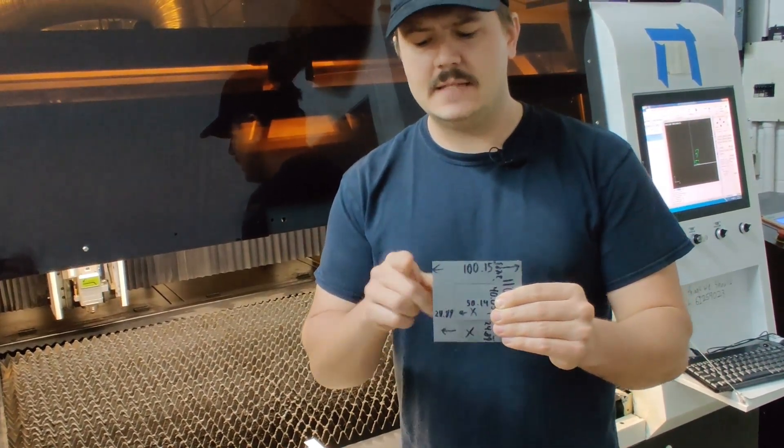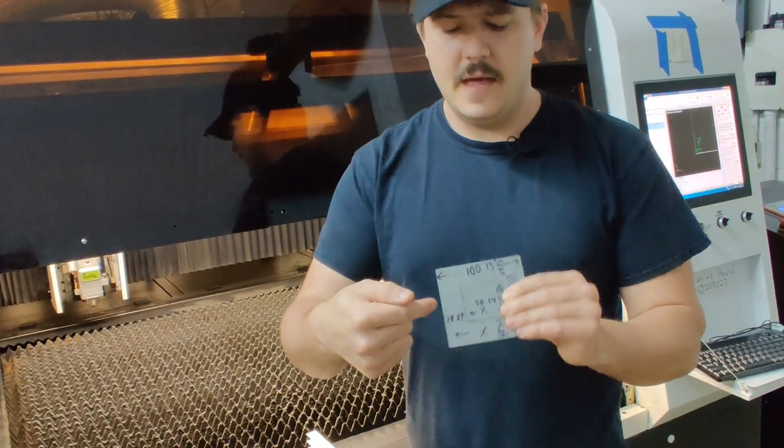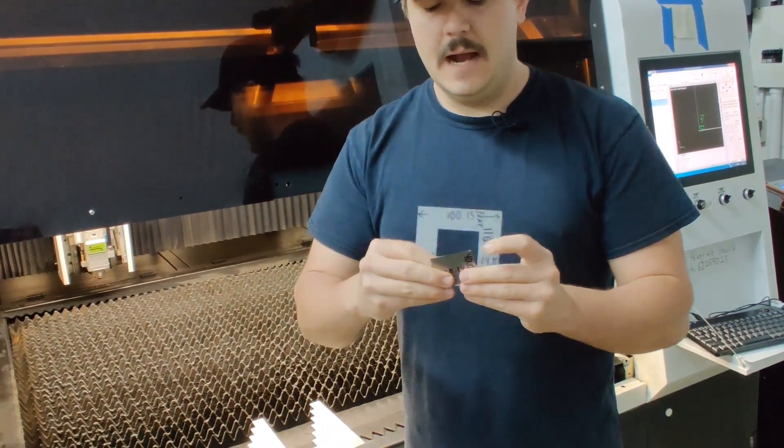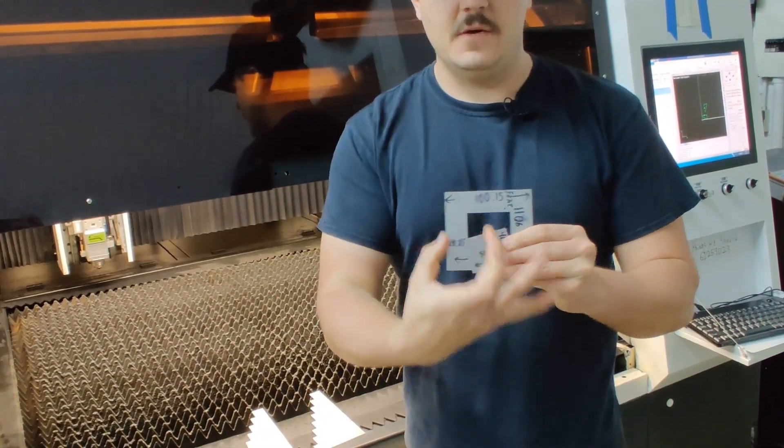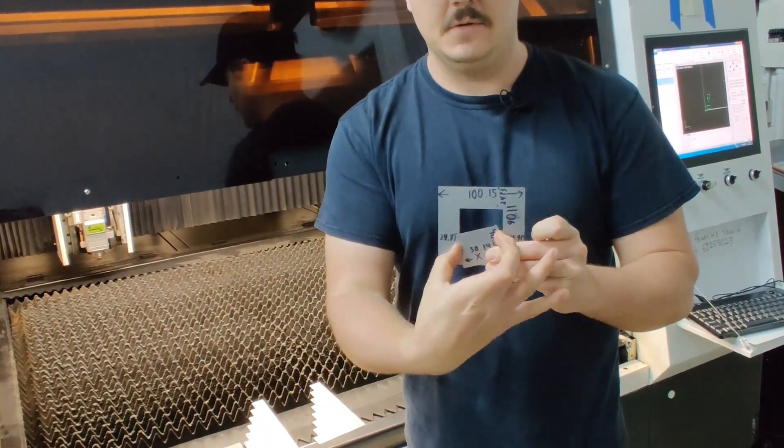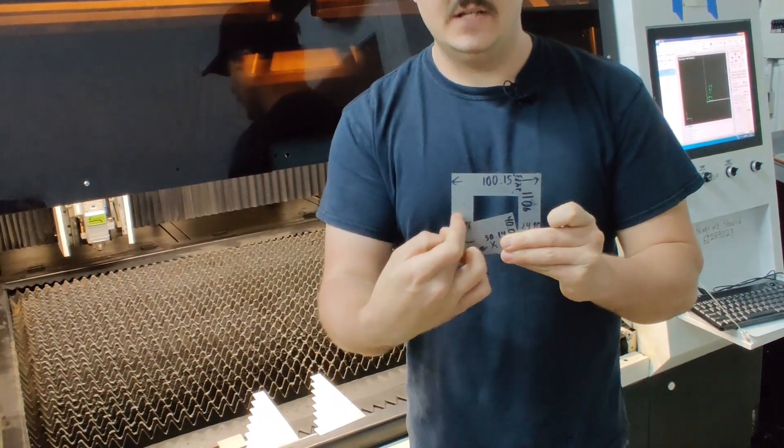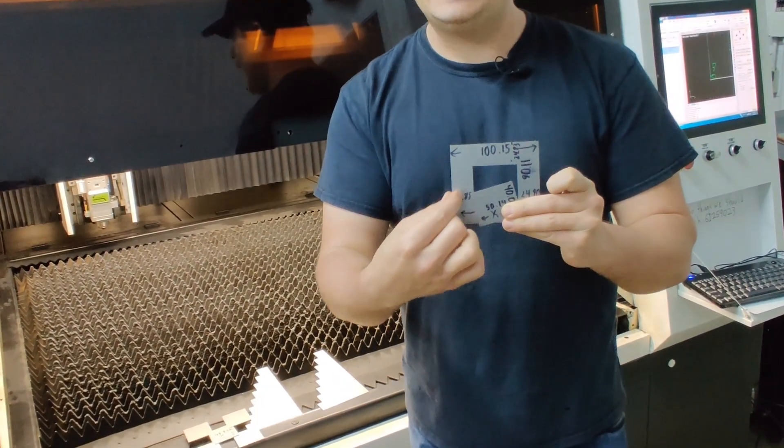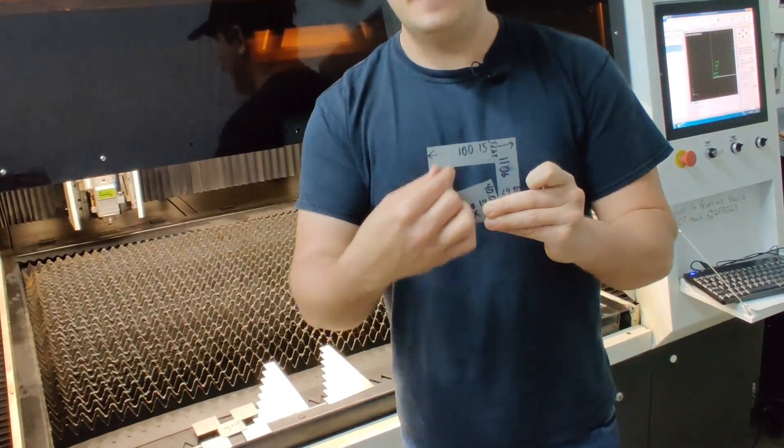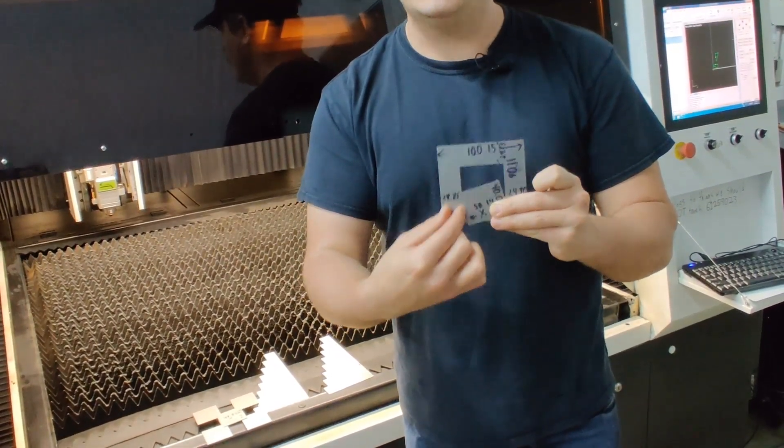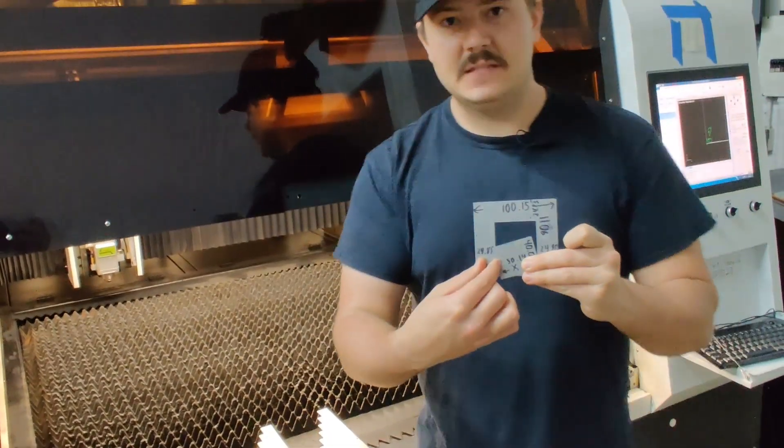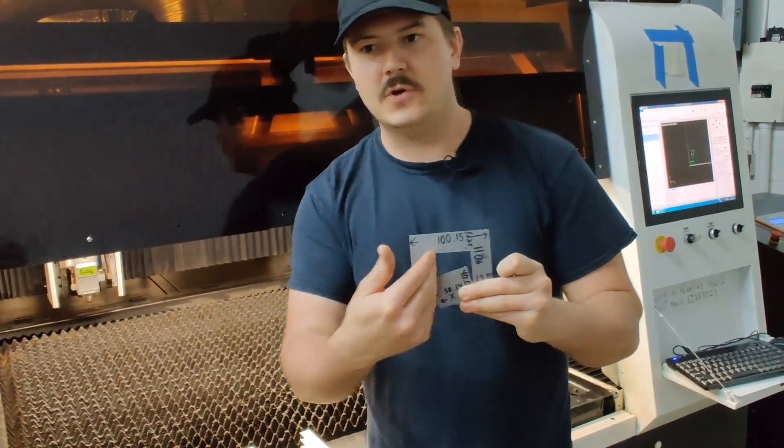You can do this with a feeler gauge and that'll get you close, but the most precise way is to cut a square, then you measure the widest point with a micrometer, then you measure the width in three places and you subtract the three smaller numbers from the bigger number. You're going to be left with a really tiny number, then you're going to divide that by two and that is going to give you one laser width.